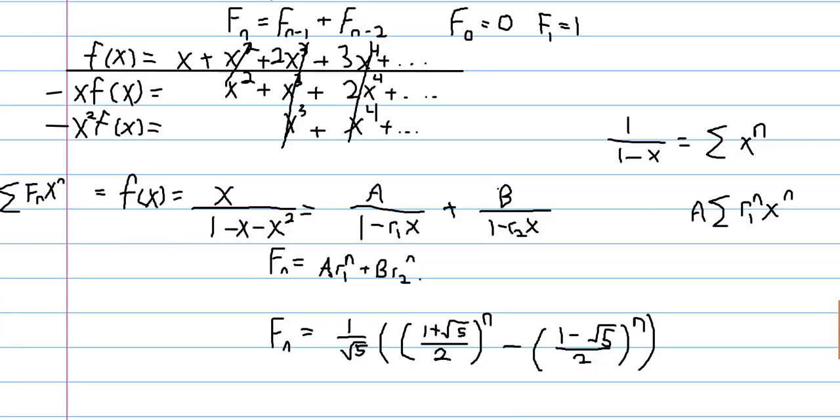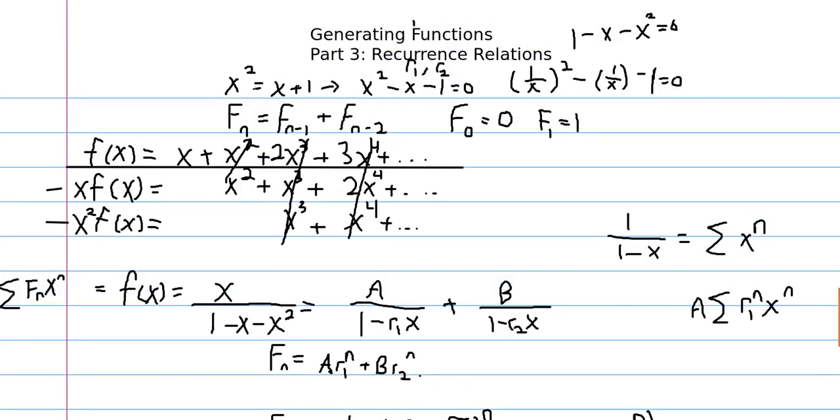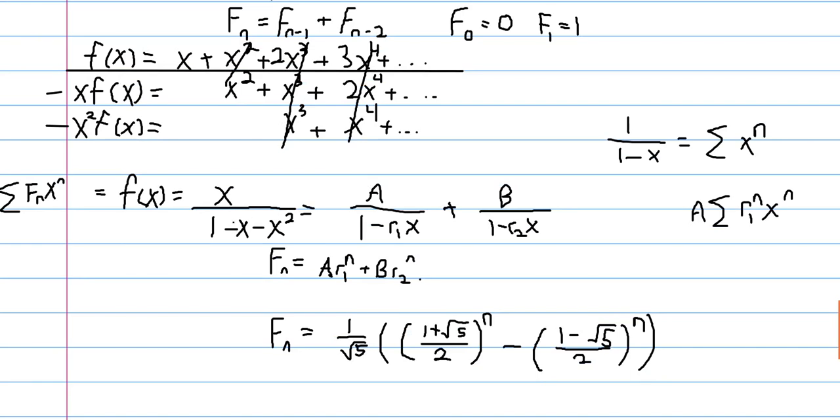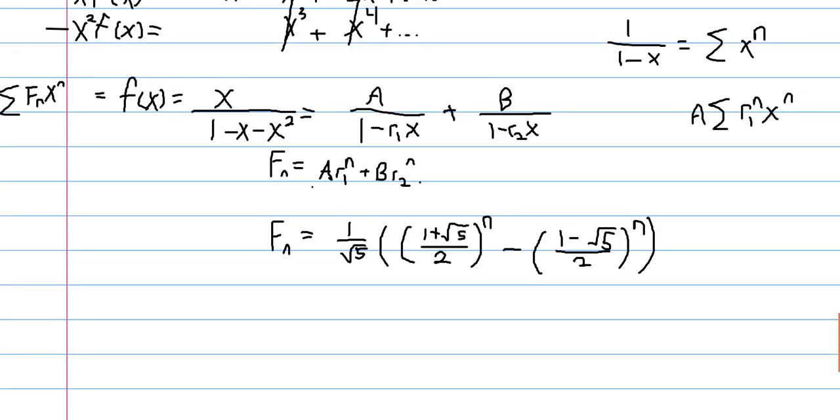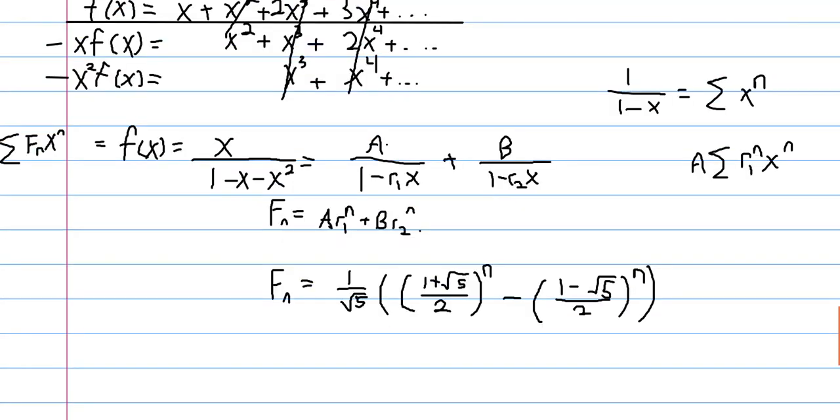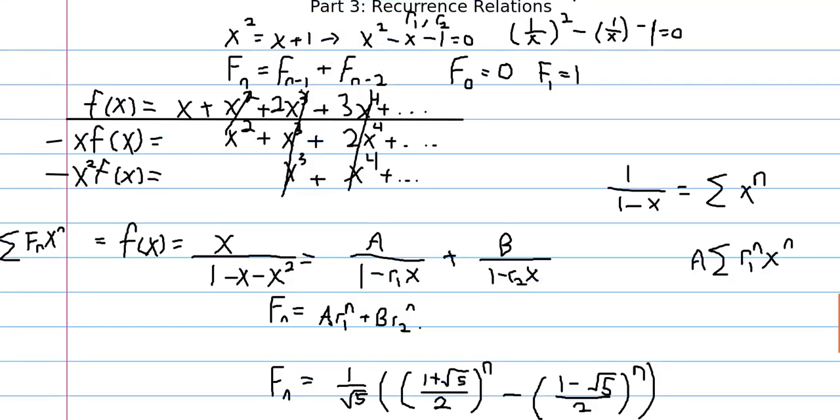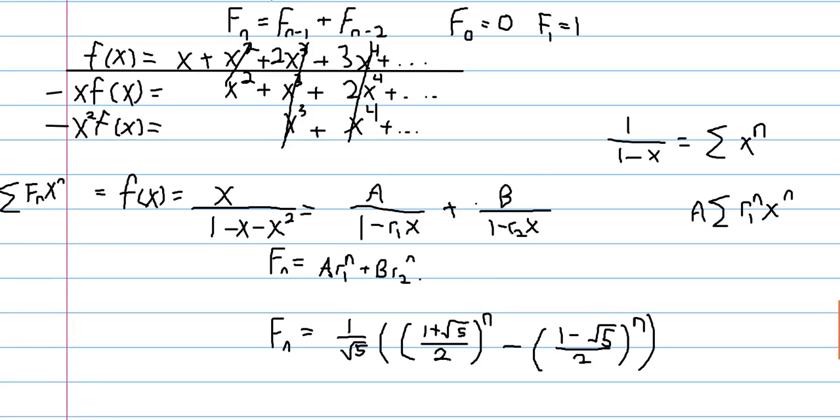But anyway, this is how generating functions can be used to solve recurrence relations. And this partial fraction decomposition here is actually applicable for more than a two term sort of thing. You know, if you just calculate the characteristic polynomial, the explicit form will always be, you'll have the roots to the nth power and then times some coefficient. And that can be proved more generally just using generating functions.